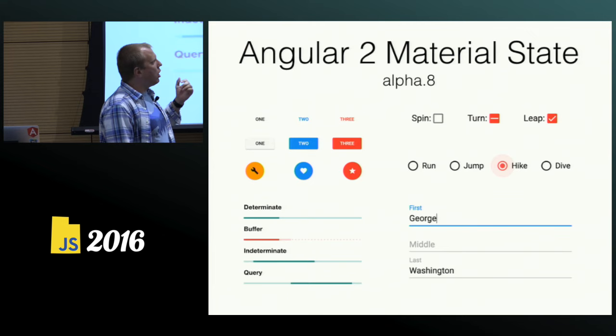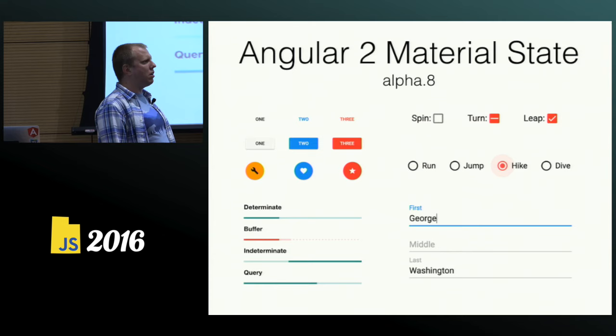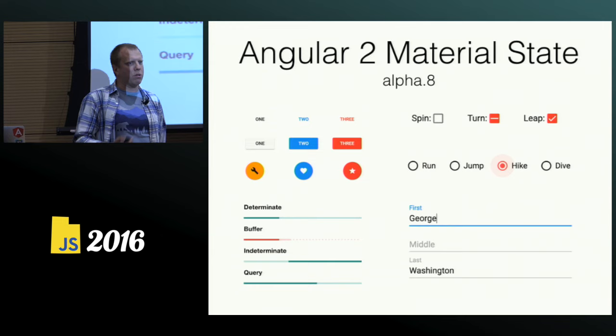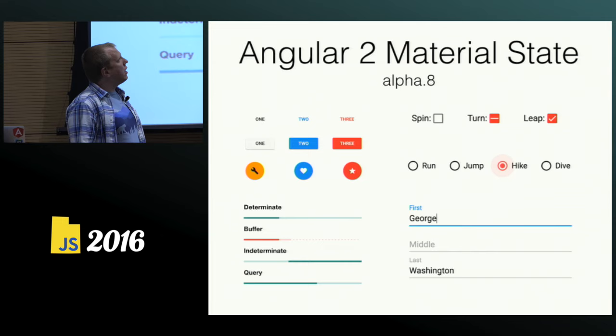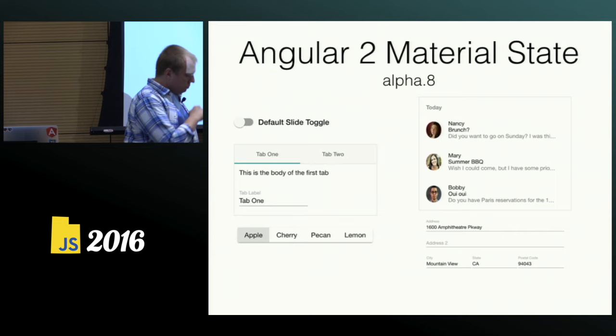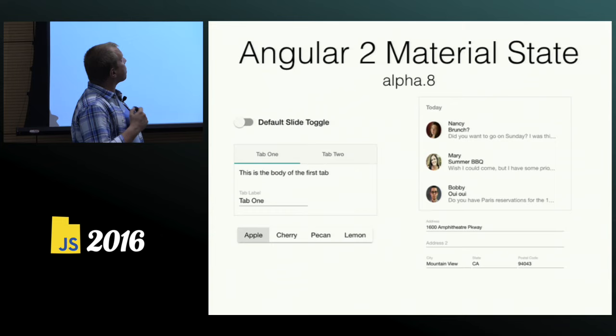We went from 6 components at ng-conf to now over 18 components, so we're building them fast. We have a lot of help from the community and from other members inside Google — 20%ers helping create components like buttons, progress bars, progress circles, checkbox, input. Everything follows the material design spec.